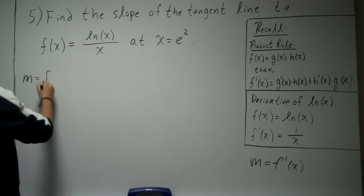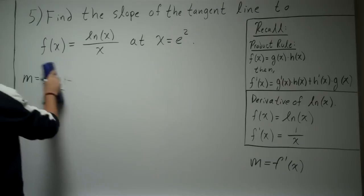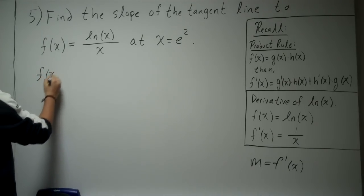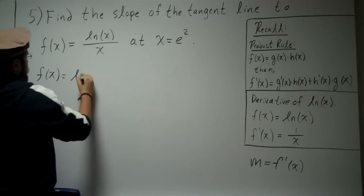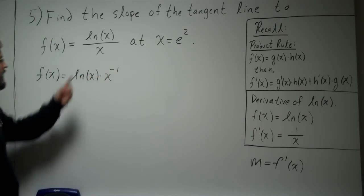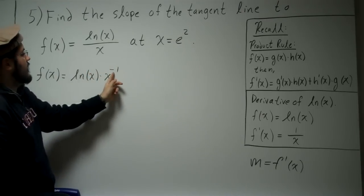So m = f'(x). Alright, actually, let's do some algebra first. So f(x) is equal to ln(x) times x to the negative one. So I went ahead, I moved the x to the top, to the numerator, and I have negative one power.